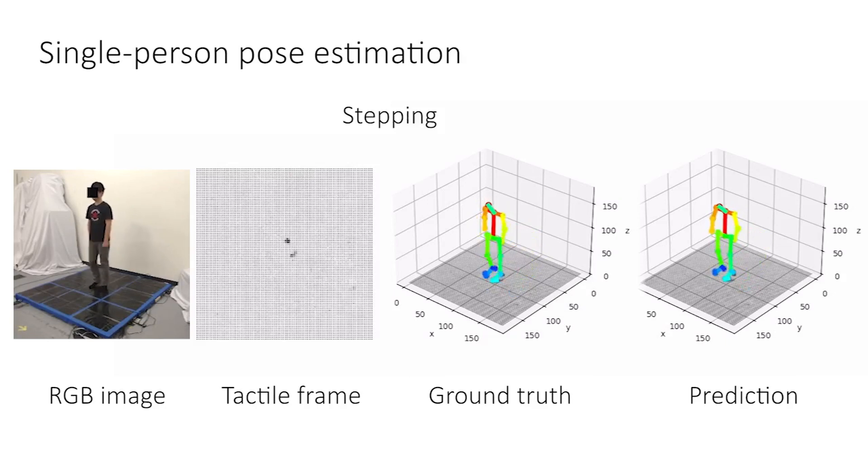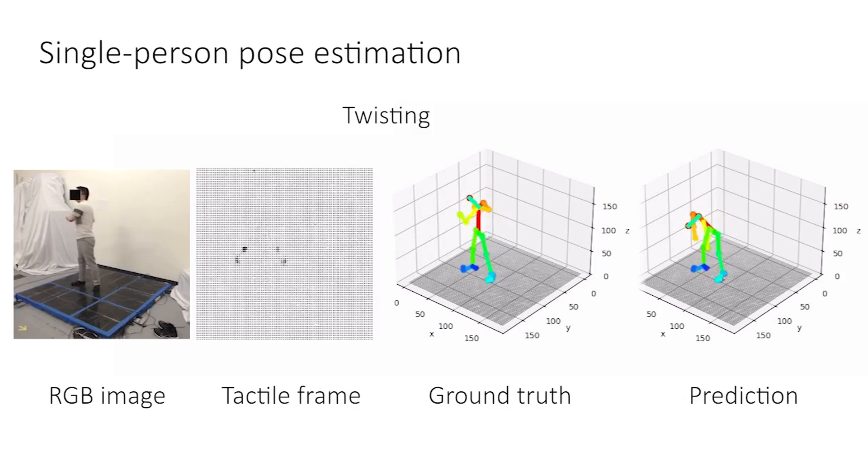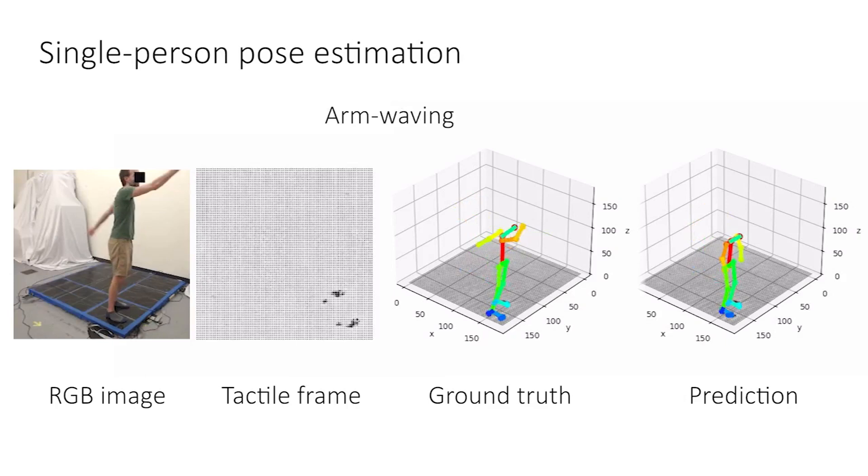The prediction on upper body, especially the arms, are generally less accurate than the ones on the lower body and the feet. This agrees with our observation that the movement of arms or upper body seldom affects the force distribution on the foot pressure maps.